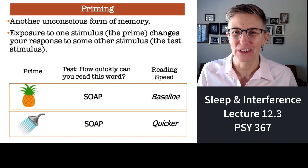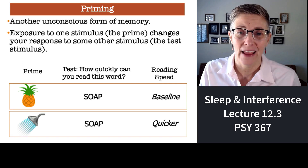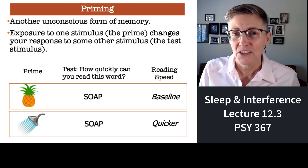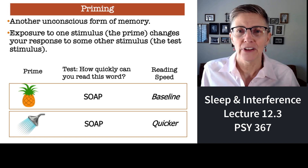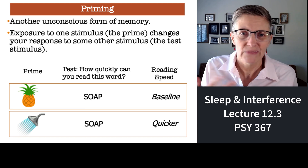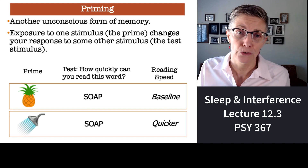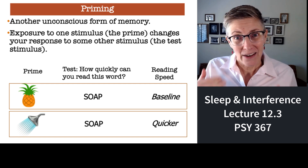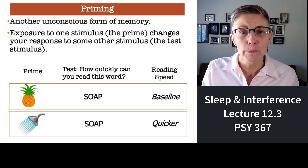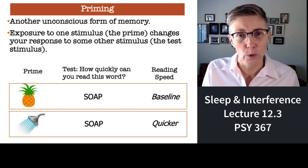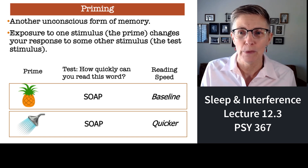So did it work? I'm sure it worked — priming works like a charm. Just to reiterate: if you wanted to measure priming, you might ask participants to read a word, let's say 'soap.' If I show you a pineapple and then ask you to read the word 'soap,' there's no relationship between pineapples and soap, so that gives you a baseline measure. Compare that to people who were shown a picture of a shower first — those people will read the word 'soap' more quickly, because you've just primed them with something related to soap, namely a shower.